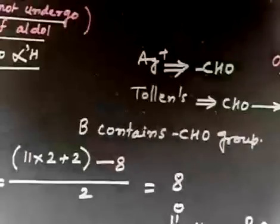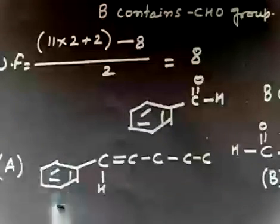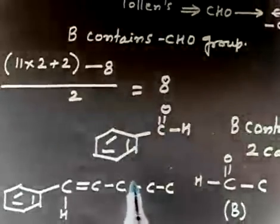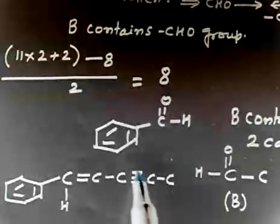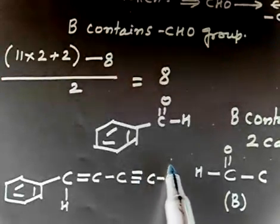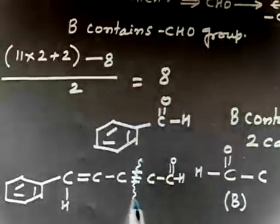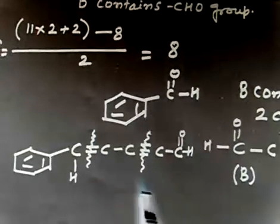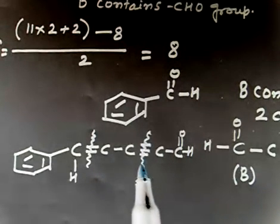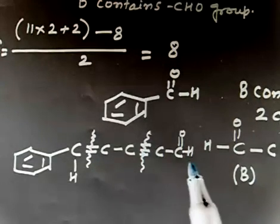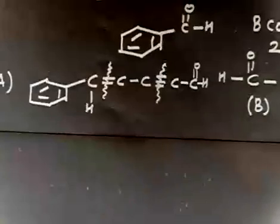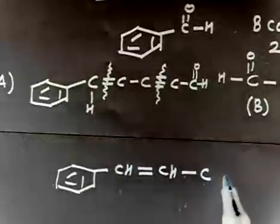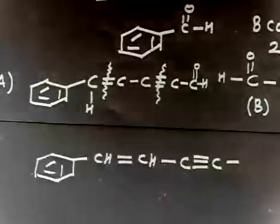The total unsaturation factor is 8. Accounting for the benzene ring (4 degrees) and the double bond (1) and the aldehyde (1), that gives 6 — I need 2 more degrees of unsaturation. That is only possible if I introduce a triple bond here. Then ozonolysis will break at both the double bond and the triple bond, giving CHO groups.